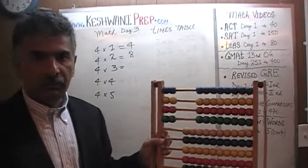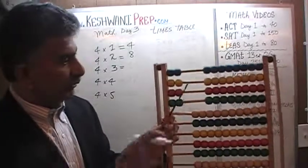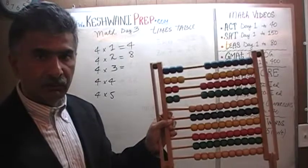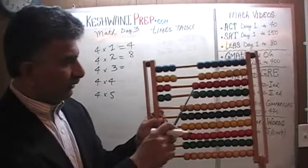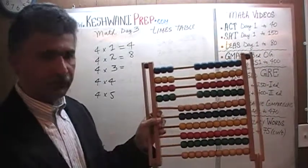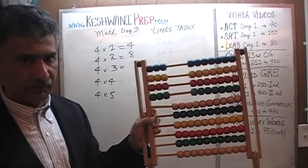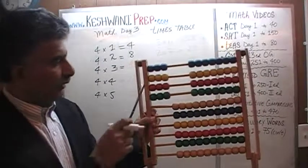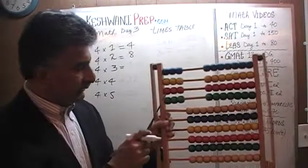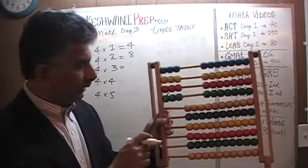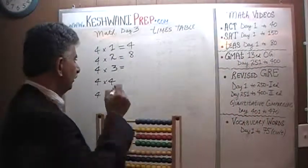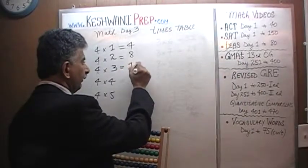How about four threes? Now we have to find a group of threes. Here is the first group of three, here is the second group of three — we have two threes. Here is the third group of three, that's three threes, and four threes. How many do you suppose four threes are going to be? Let's count: one, two, three — four, five, six — seven, eight, nine — ten, eleven, twelve. Four threes are twelve.